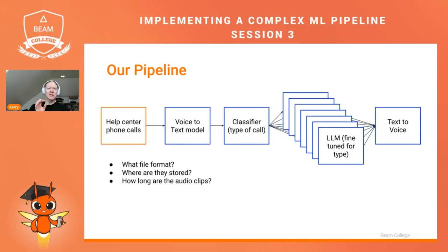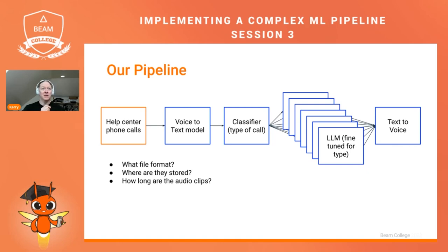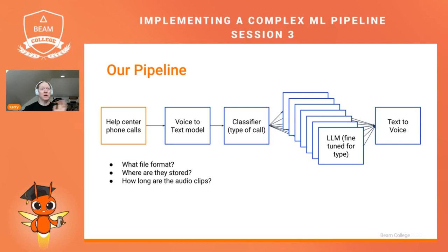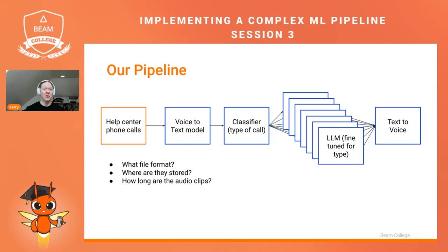Today we're going to dive into each of those steps and talk about what we're going to do in a more concrete way. Let's begin with the help center phone calls. We need to ask ourselves: what format do those files come in? I'm trying to show the kind of questions you would ask yourself when building a pipeline, given your business use case, and how to translate those steps and needs into concrete data to actually implement your pipeline.